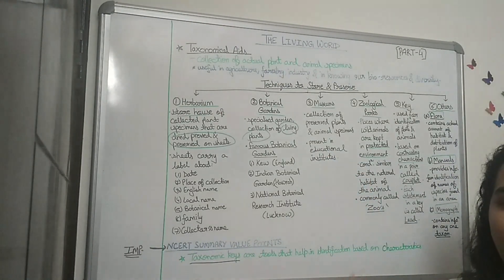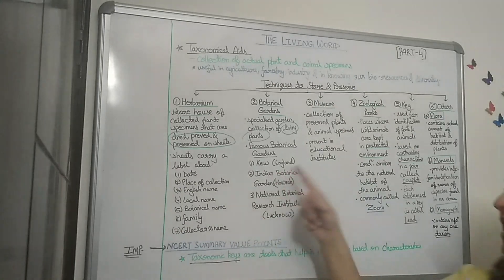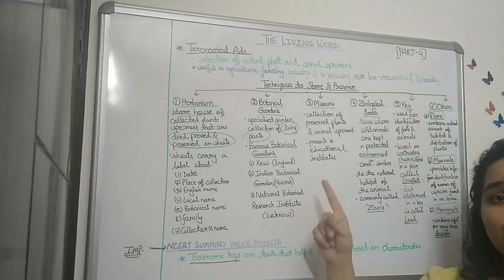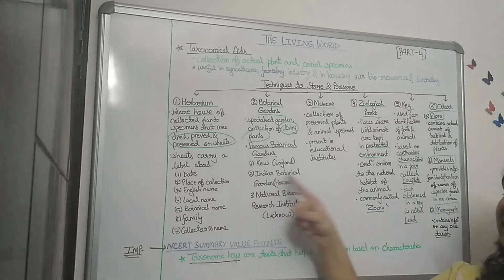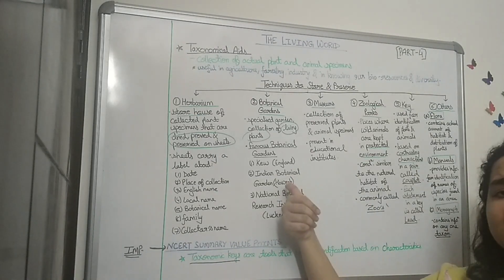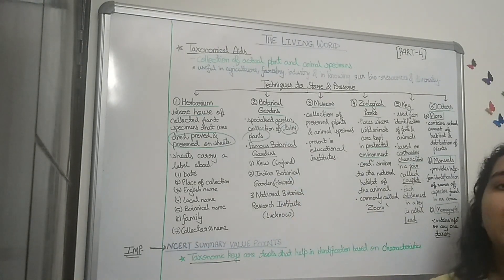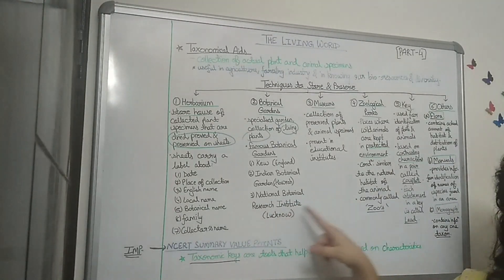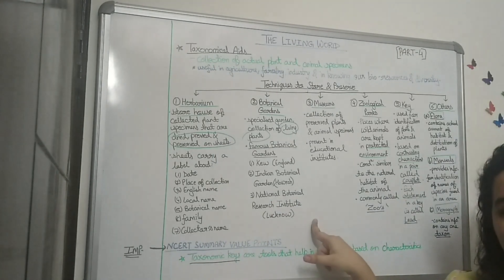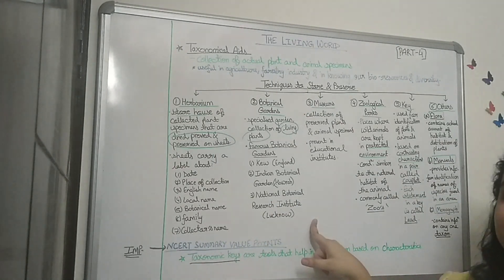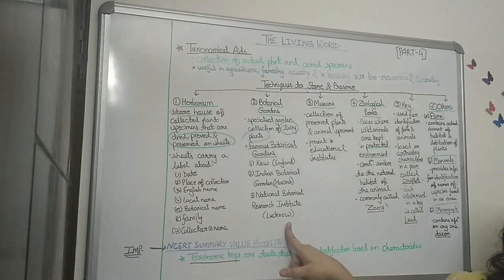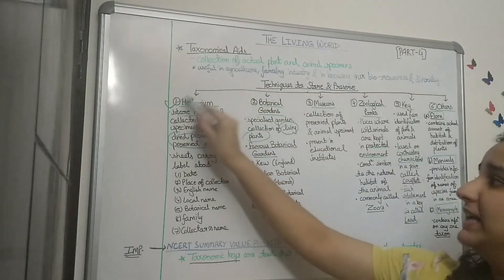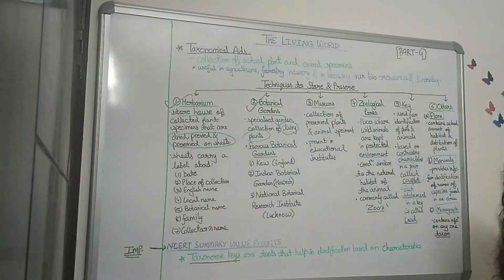The NCERT text mentions three famous botanical gardens: first is Kew, present in England; second is the Indian Botanical Garden, present in India; and third is the National Botanical Research Institute, also present in India, in Lucknow. That covers botanical gardens — the first two techniques were both about plants.